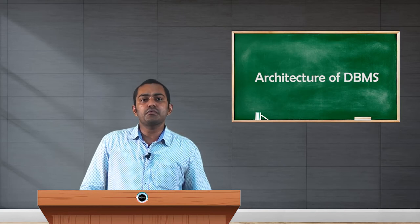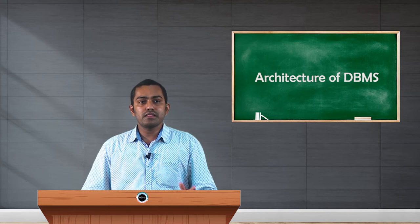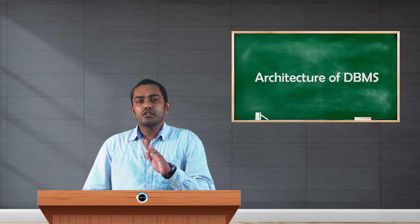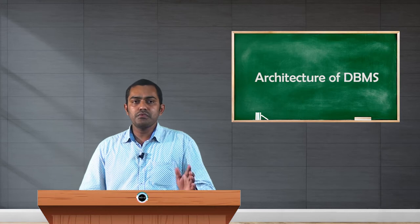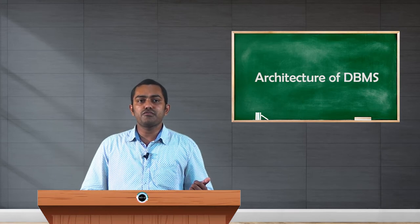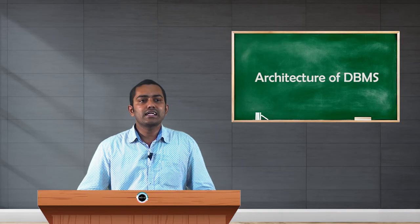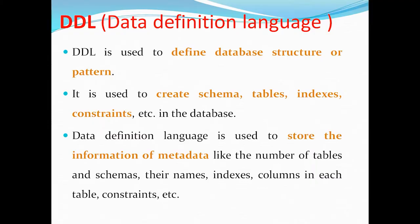We need to decide, for example, whether the first column stores student numbers only, or a combination of numbers and text. We also need to specify the size — whether it is 6 or 7 characters — depending upon the size of data going into that column. We need to decide how many columns are in the table and what type of data will be stored. DDL is used to create schemas, tables, indexes, and constraints.